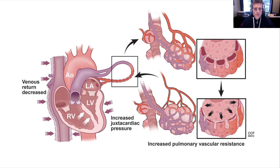Generally, most of the time, the hemodynamic effects of positive pressure ventilation are usually harmful or negative. Pushing positive pressure into the thorax transmits that pressure to the SVC, the IVC, and the right side of the heart, which can decrease preload. So if we decrease RV preload, we're ultimately going to decrease LV preload.